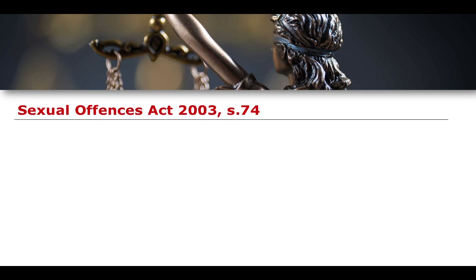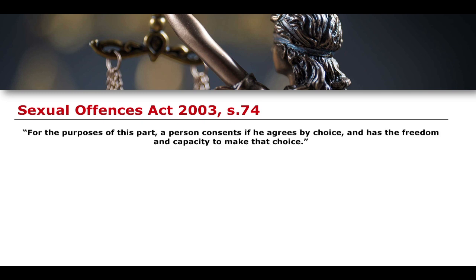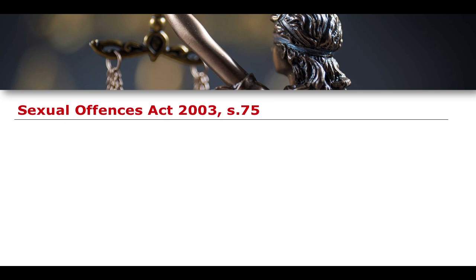Jumping from sections one to four to section 74, we can see that for the purposes of this part, a person consents if he agrees by choice and has the freedom and capacity to make that choice. That is how the legislation defines consent — it is an agreement by choice, but also a choice that is devoid of any coercive element. Not only do you have to agree by choice, but you cannot be coerced into doing so such that you have no free will; you must also have the freedom and capacity to make that choice.